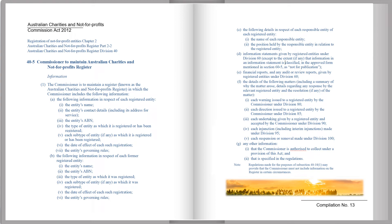Section 40-5: Commissioner to Maintain Australian Charities and Not-for-Profits Register. The Commissioner is to maintain a register known as the Australian Charities and Not-for-Profits Register, in which the Commissioner includes the following information. Compilation No. 5. The following information in respect of each registered entity.